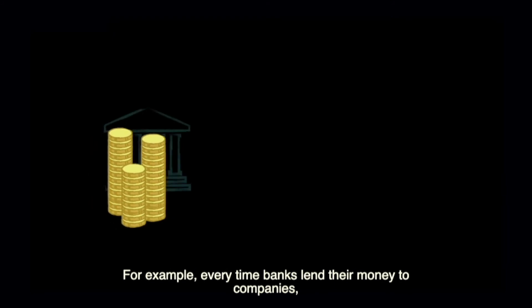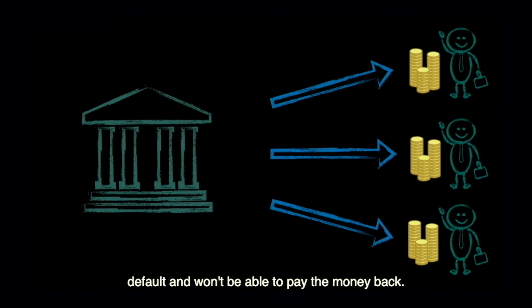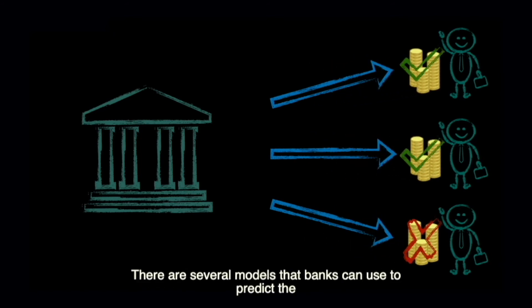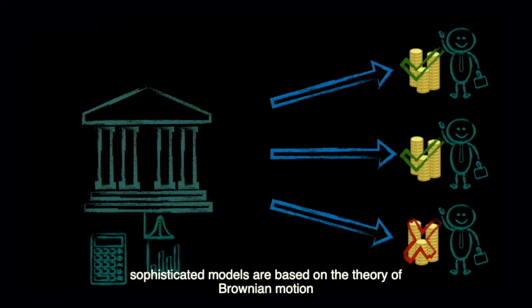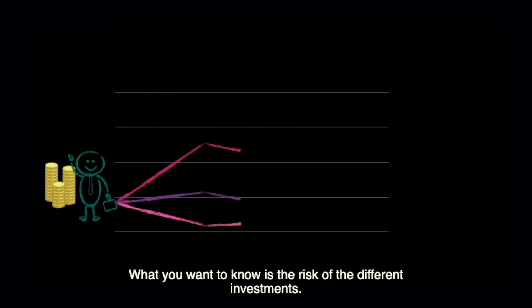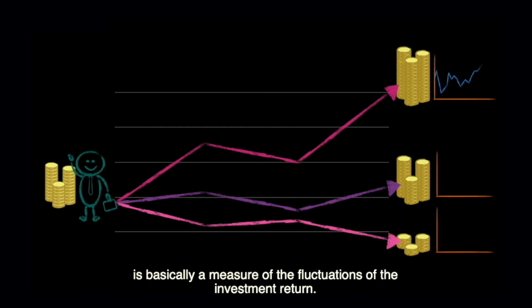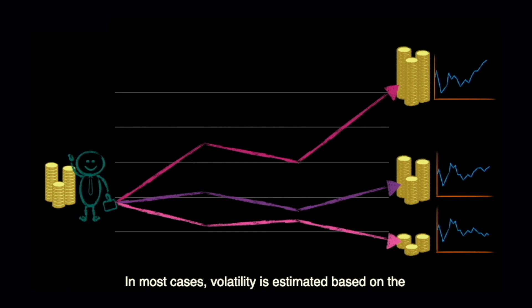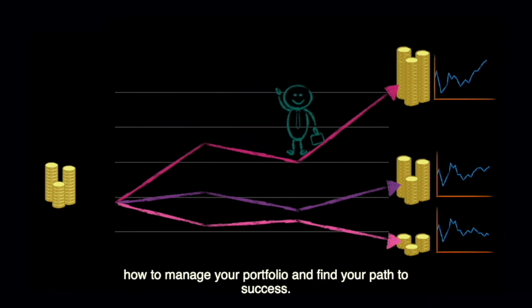For example, every time banks lend their money to companies, they need to estimate the risk that some of their borrowers default and won't be able to pay the money back. There are several models that banks can use to predict the probability of default of a borrower, and some of the most sophisticated models are based on the theory of Brownian motion. Suppose you want to invest your money but are not sure which stock to choose — what you want to know is the risk of the differing investments. This risk is assessed with a parameter called volatility, which is basically a measure of the fluctuations of the investment return. In most cases, volatility is estimated based on the theory of Brownian motion, and sometimes it is everything you need to know to manage your portfolio and find your path to success.